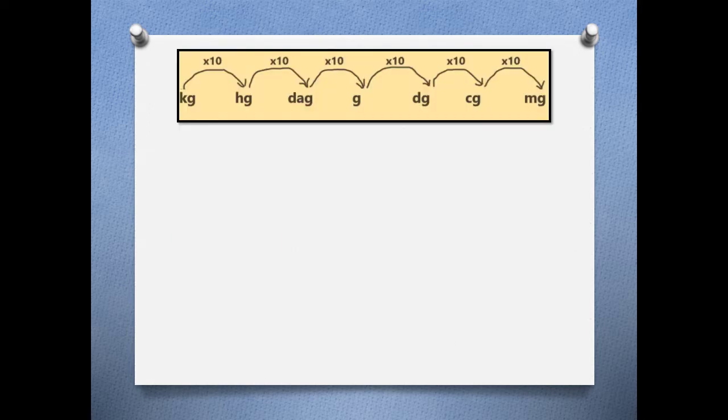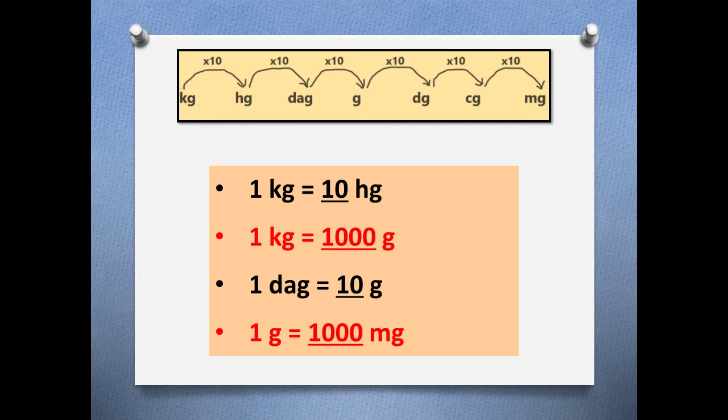Now if we have to jump from one unit to another we will multiply it by 10. Suppose we want to go from kilogram to hectograms, so we go by taking one jump.